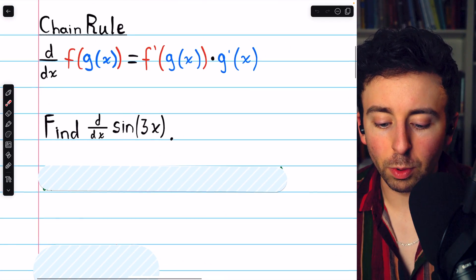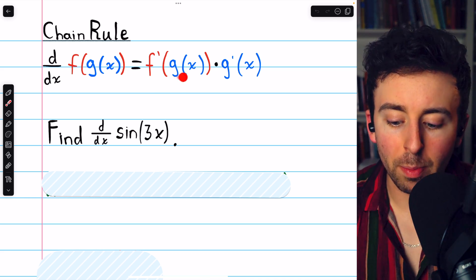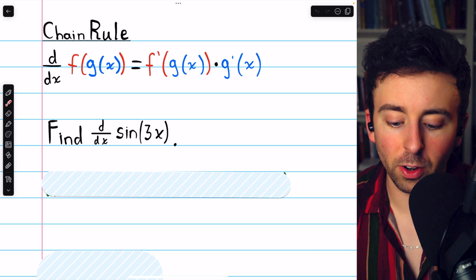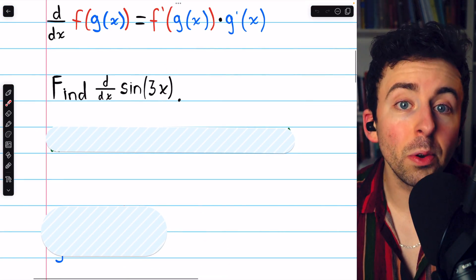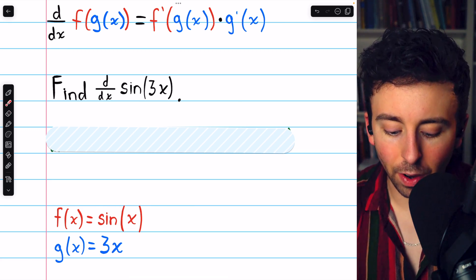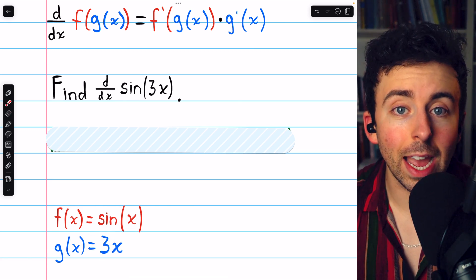The chain rule is written here for your convenience. It's f prime of g times g prime. So let's give it a try with this function, identifying the outside function f as sine x and the inside function g as 3x.